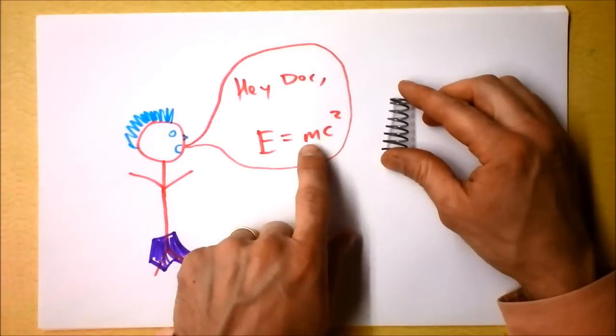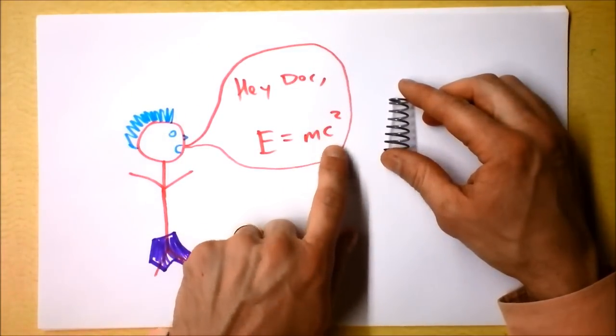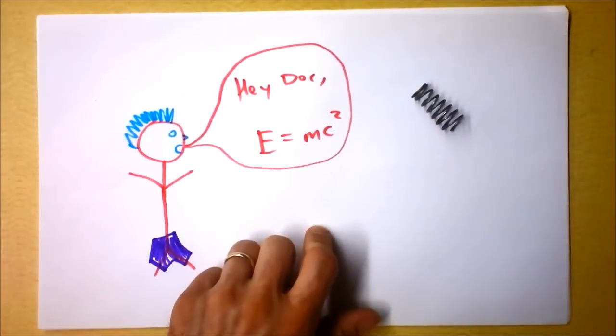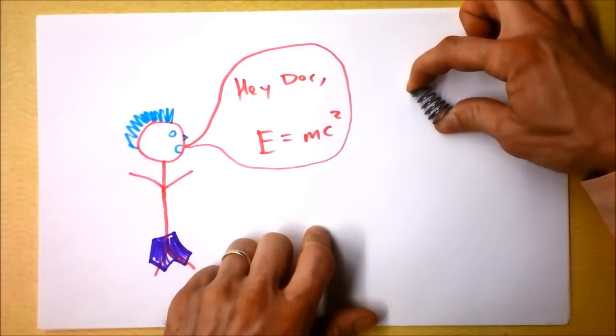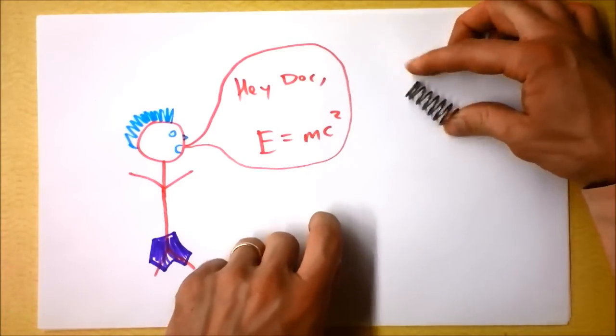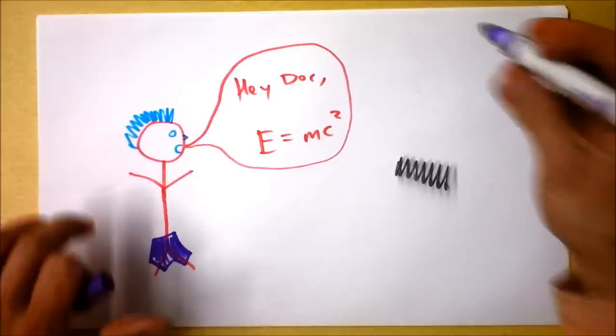If energy is mass times the speed of light squared, that seems to say that if I take this spring that's sitting here, and I squeeze it, that it will have more energy. Everybody agrees it has more energy. I mean, we don't have to argue about that.